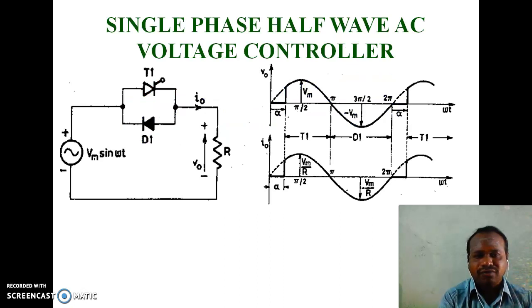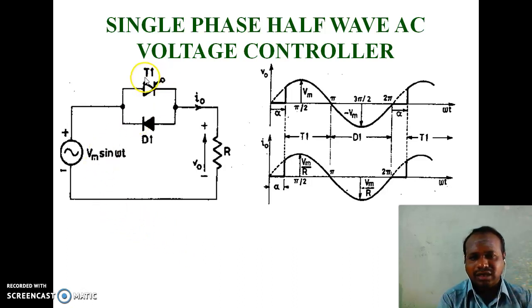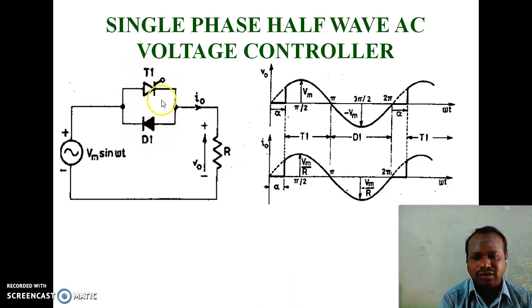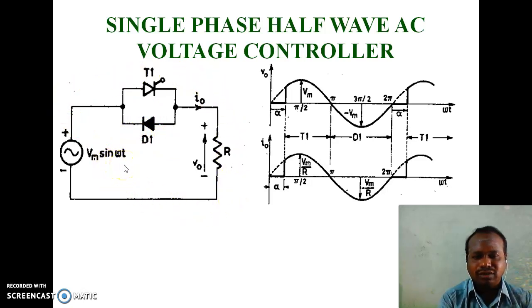Single-phase half-wave AC voltage controller: here the thyristor T1 and diode D1 are anti-parallely connected. T1 is a controlled device and D1 is an uncontrolled device. T1 controls the positive half-cycle, and during the negative half-cycle, D1 conducts and it is an uncontrolled device. It is the power circuit diagram of a half-wave AC voltage controller because half of the device is controlled and half is uncontrolled.